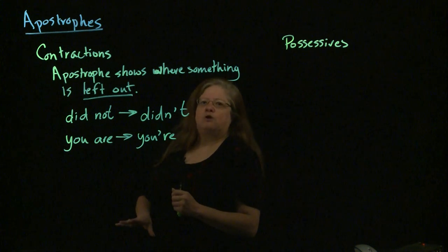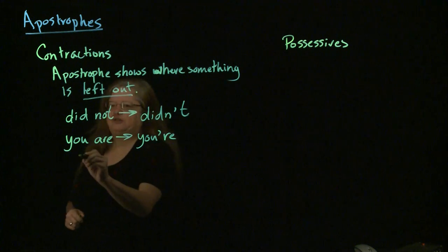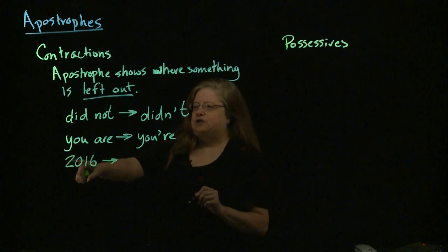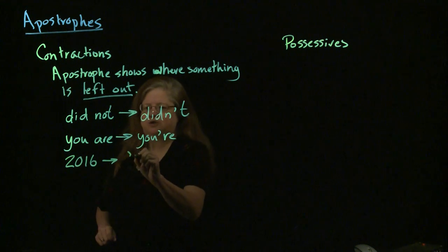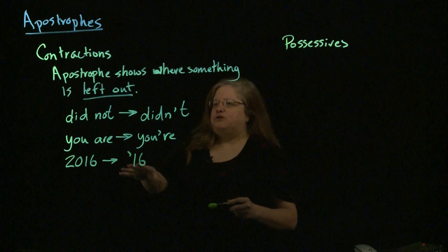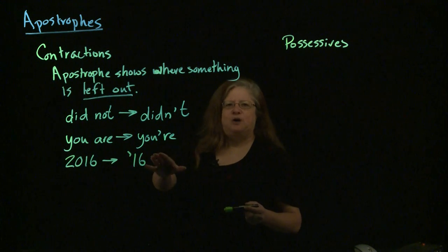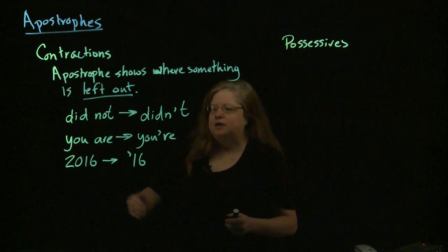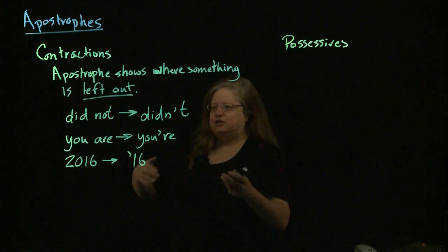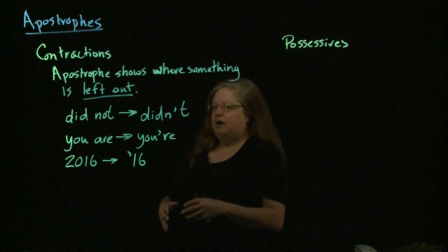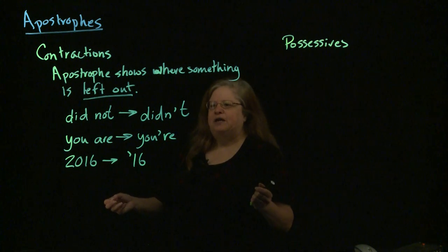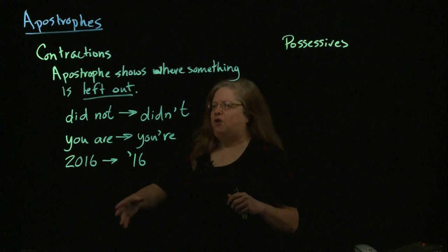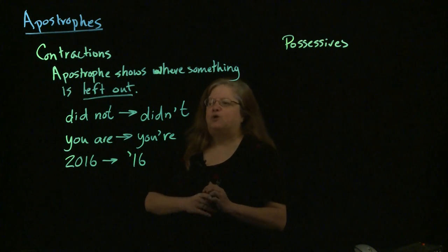By the way, this also works with numbers. If you're shortening the year 2016, you're taking out those first two digits, and so that's where the apostrophe goes — you have apostrophe 16. I see this abused a whole lot. I see the apostrophe after the number, but if you put an apostrophe after a number, that's the symbol for feet. Going around area high schools in the springtime when graduation is happening, I will see banners that say '16 feet graduation.' I seriously doubt any of those seniors is actually 16 feet tall. So remember, the apostrophe is where things are left out.